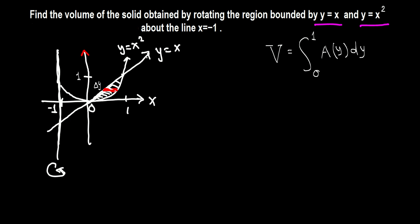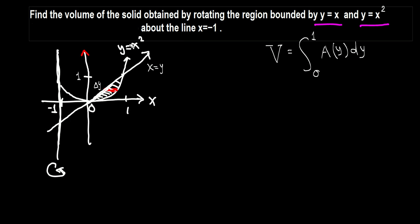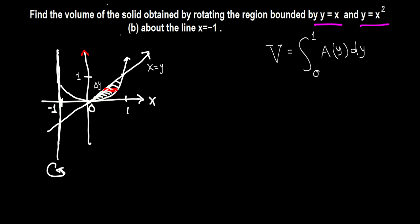We also need to write these curves as functions of y — that is, x equals some function of y. So y equals x gives us x equals y, and y equals x squared gives us x equals the square root of y.